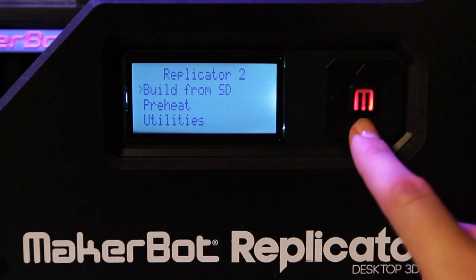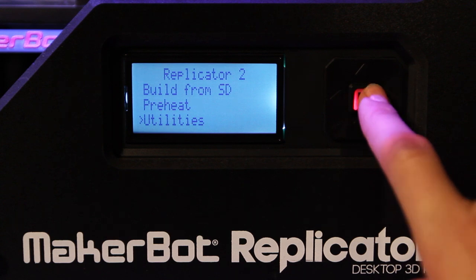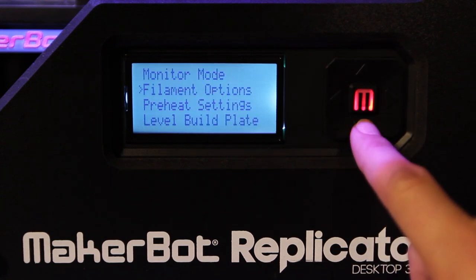Your MakerBot Replicator 2 desktop 3D printer will give you a few chances at loading filament before moving on. If you don't get it quite right the first time, you can always repeat the process from the main menu by going to Utilities, Filament Options, and then choosing Load.